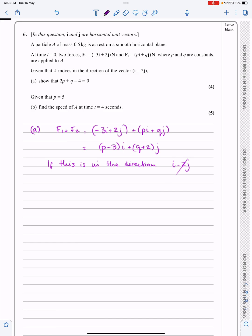I've got to do it in the same way. What I'm going to do is I'm going to do my I component 1 divided by my J component minus 2 is the same on the other side then. My I component P minus 3 divided by my J component Q plus 2. That means that they're going in the same direction parallel to each other.